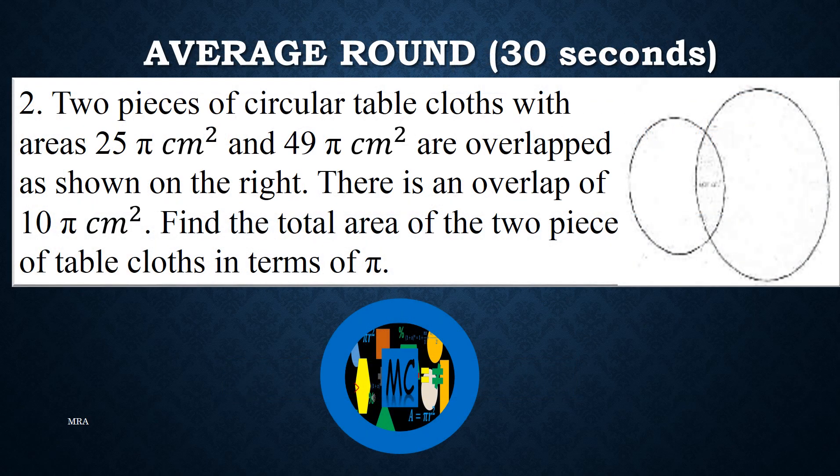Question 2. Two pieces of circular table cloths, with areas 25 pi square centimeters and 49 pi square centimeters, are overlapped as shown on the right. There is an overlap of 10 pi square centimeters. Find the total area of the two pieces of table cloths in terms of pi.